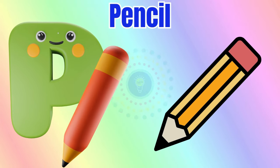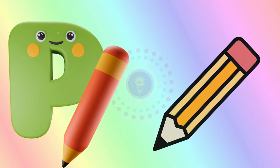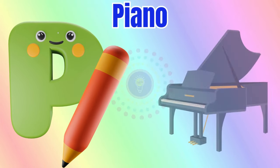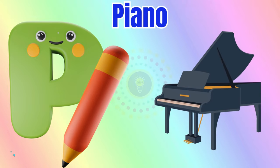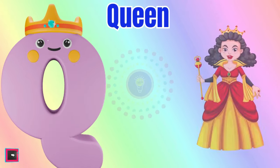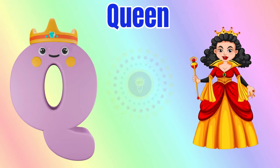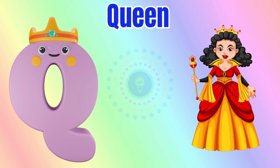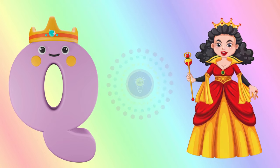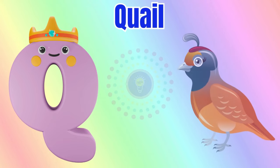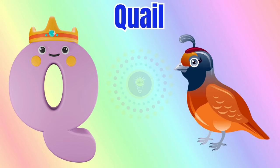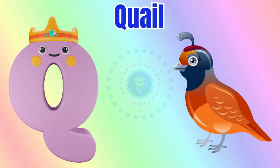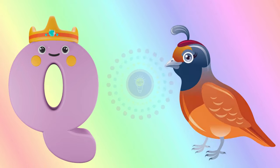P is for pencil, p-p-pencil. P is for piano, p-p-piano. Q is for queen, k-k-queen. Q is for quail, k-k-quail.